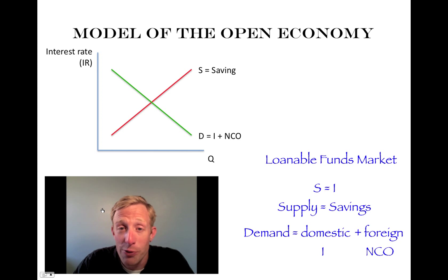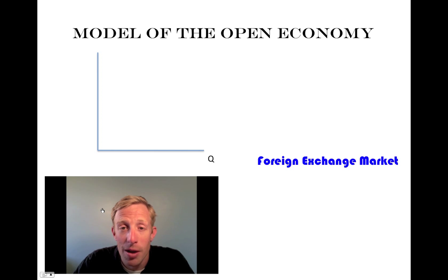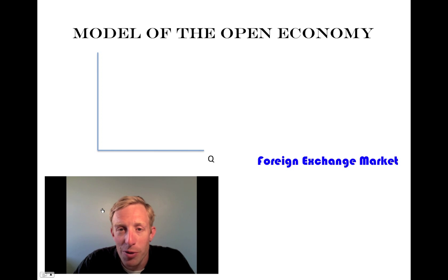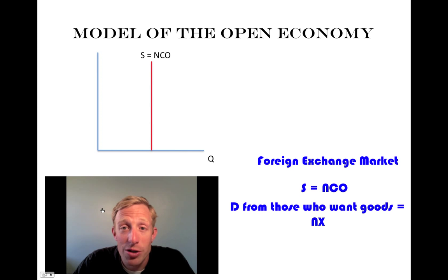The second market is the market for foreign exchange. In this market, what we're looking at is the need to acquire a domestic currency in order to buy products made by a particular country — so this would be the demand and supply of US dollars for people who want to acquire goods made in the United States. The supply is basically the net capital outflow curve — it is the availability of the financial asset currency. The demand in this market comes from people who want to buy physical goods and services, so that's the net export line. Supply is equivalent to net capital outflow and demand is equivalent to net exports.